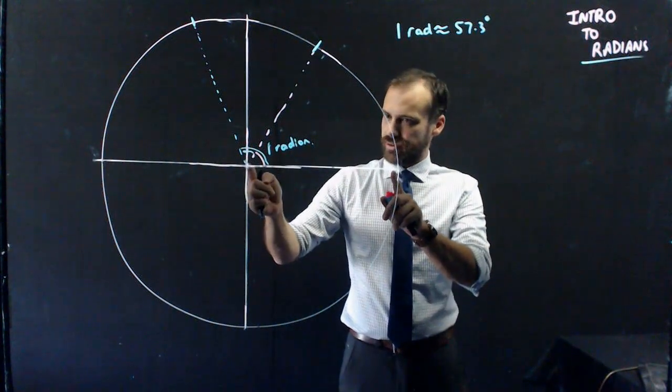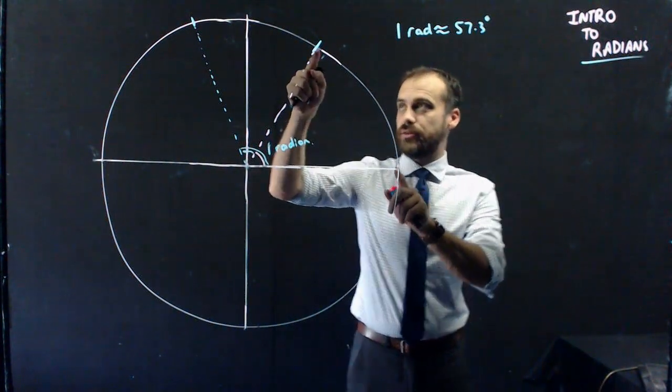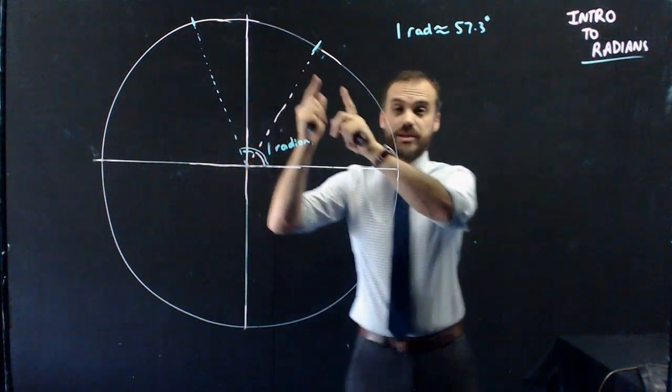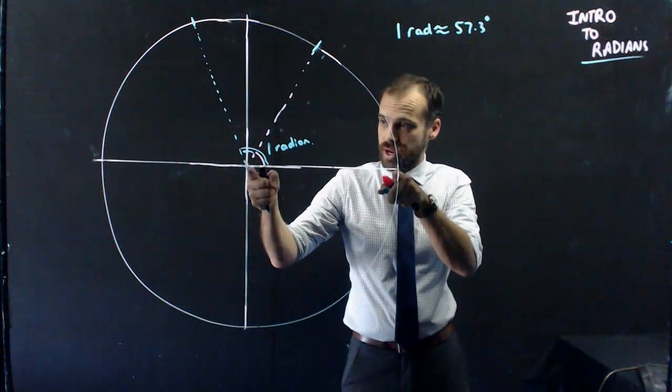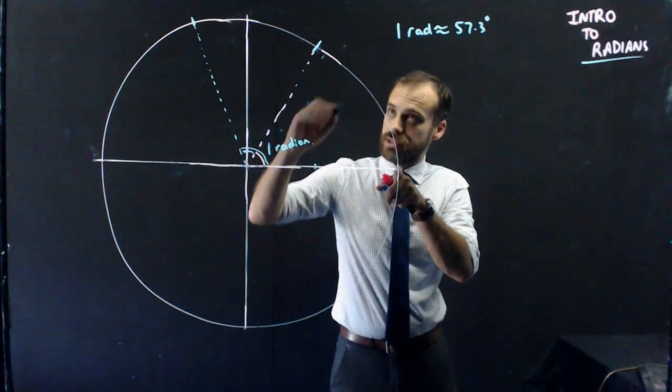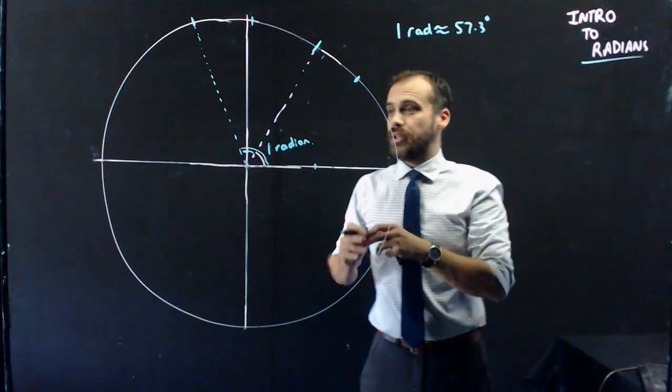Now, remember, this length is equal to that length, which is equal to that length, because that's what a radian is. The radian, this length is equal to that length, which is equal to that length.